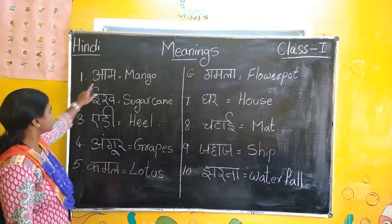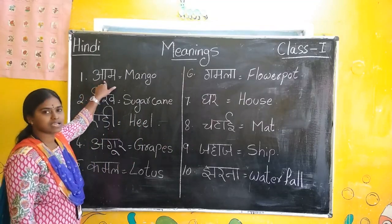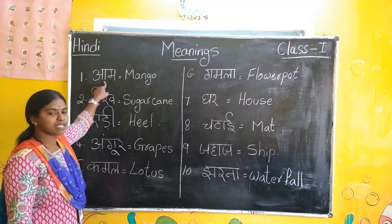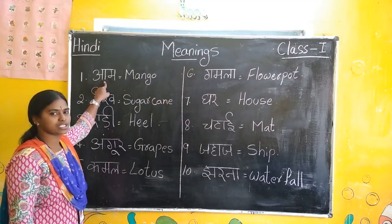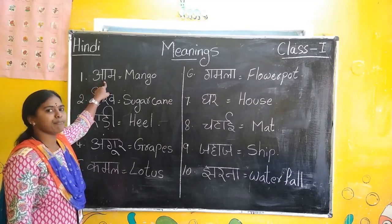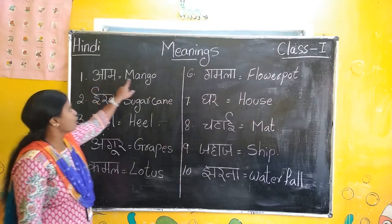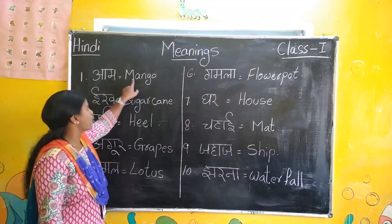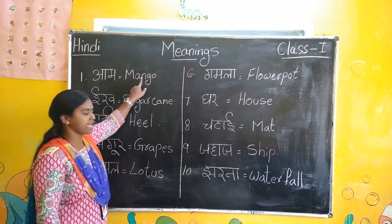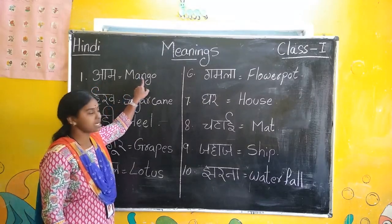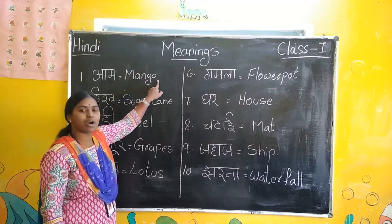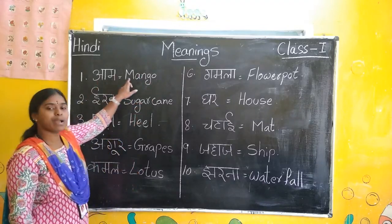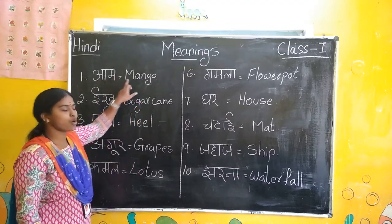Repeat once. Aam — Aam means what? Mango. You have to write mango: M-A-N-G-O. Mango. Aam — mango.